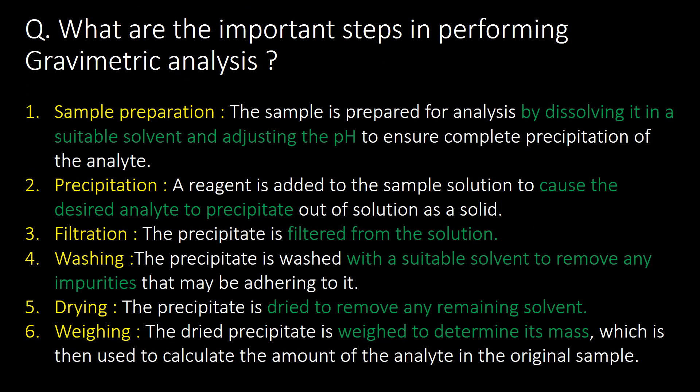Very important question: what are the important steps in performing gravimetric analysis? Here are the six important steps for performing gravimetric analysis. Step 1: sample preparation. The sample is prepared for analysis by dissolving it in a suitable solvent and adjusting the pH to ensure the complete precipitation of the analyte.